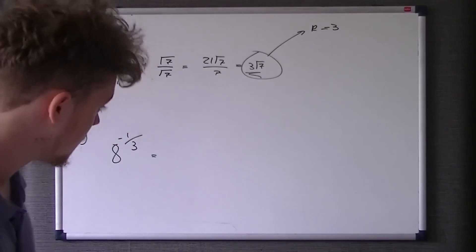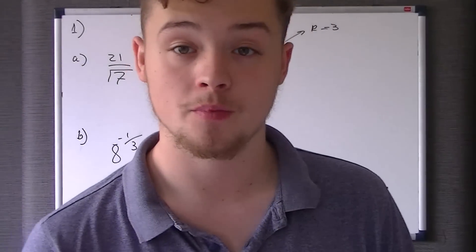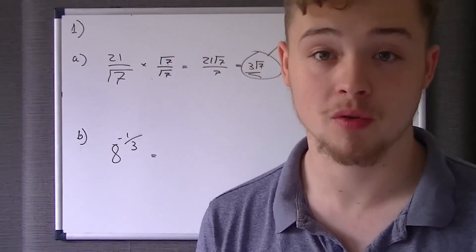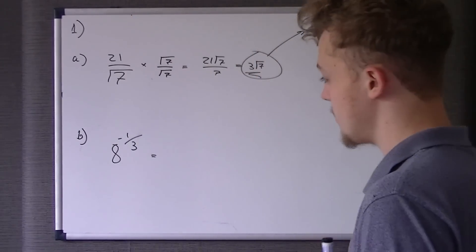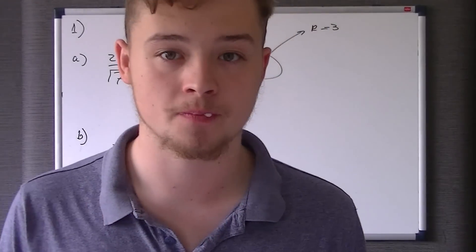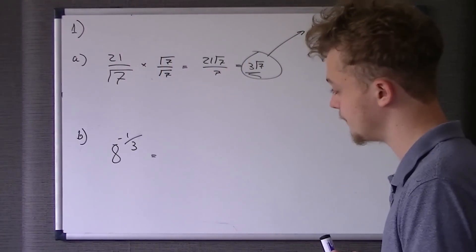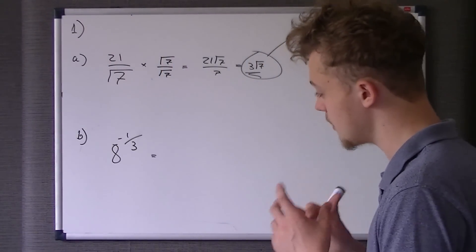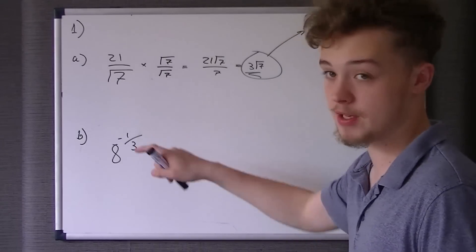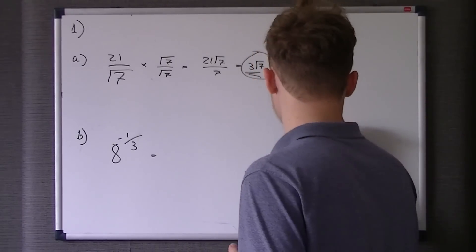Now this next bit, again, another indices rule. You always flip the fraction. Now the key with this is, we've got 8 to the power of negative a third. I think the best way to think about this, you can almost think of it as this.